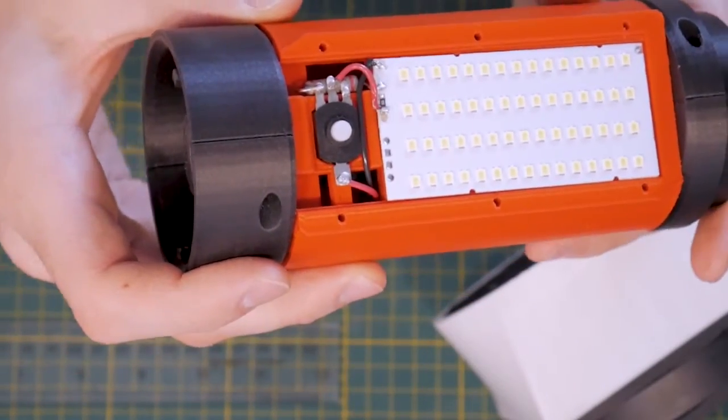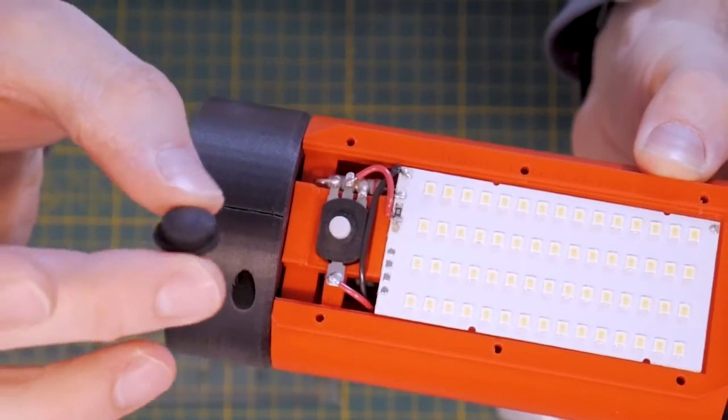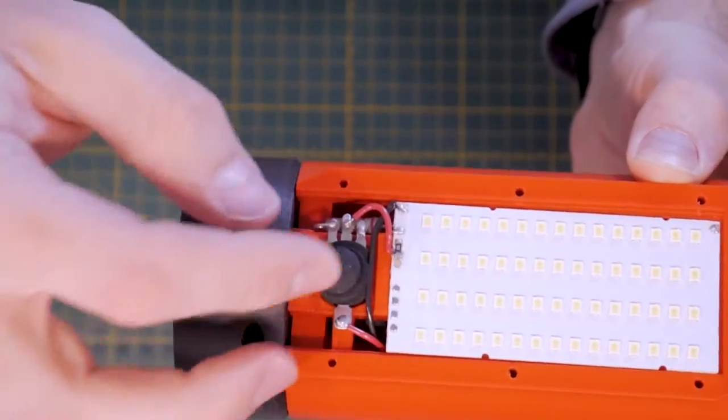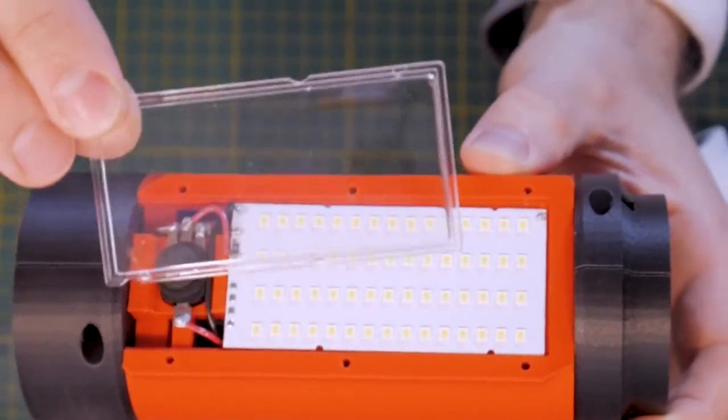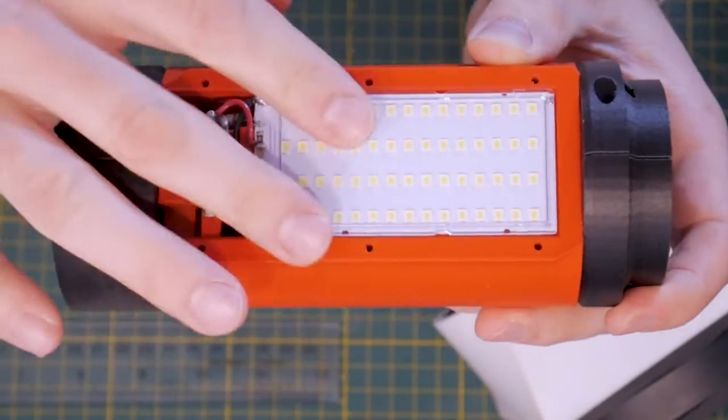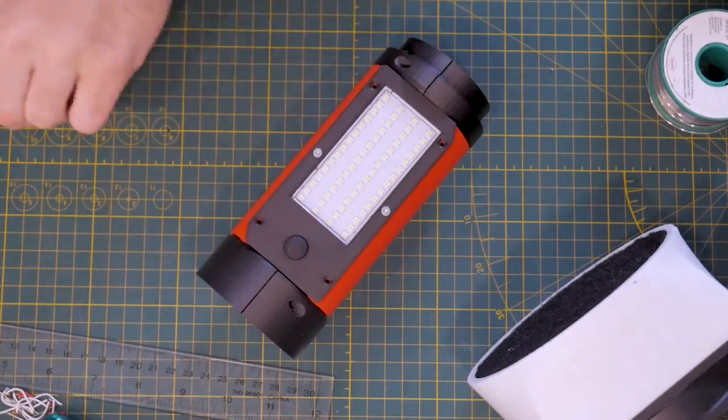With those connections completed, we can reuse the rubber button from the dollar store light as well as the clear lens. The 3D printed cover fits on top and gets secured with six number 4 by quarter-inch long flathead thread-forming screws.